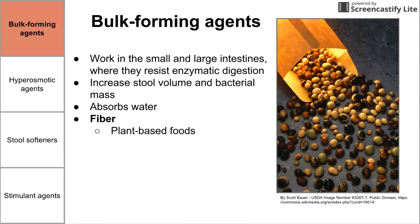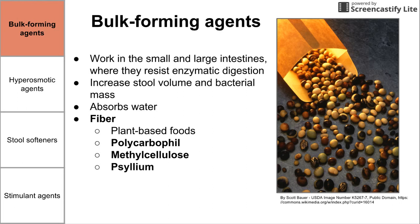Fiber comes from plant-based foods — you can see legumes in the image on the right. Polycarbophil is a drug based on fiber that acts as a bulk forming agent. Another example is methyl cellulose, and there's also psyllium. All of these work in the small and large intestine, resist enzymatic digestion, increase stool volume and bacterial mass, and because they absorb water, they allow stools to pass through more easily.